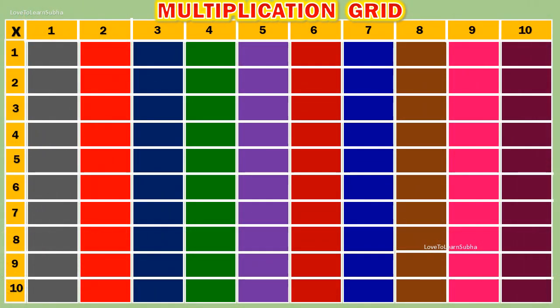Table of 1. 1 1s are 1. 1 2s are 2. 1 3s are 3. 1 4s are 4. 1 5s are 5.